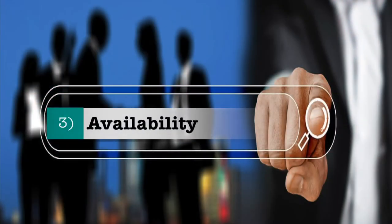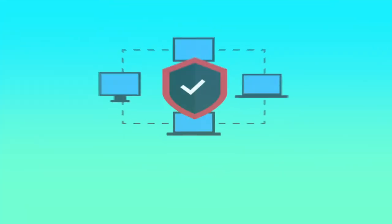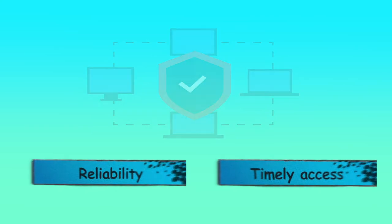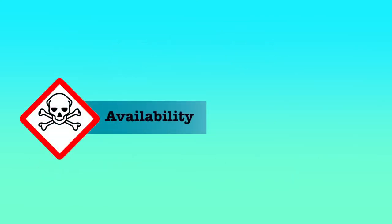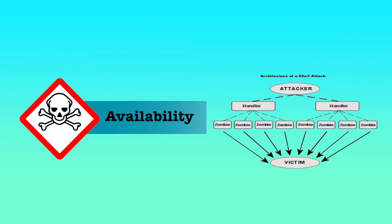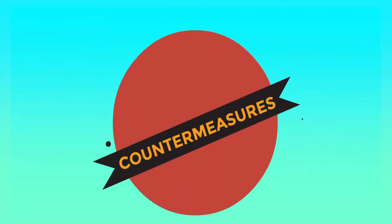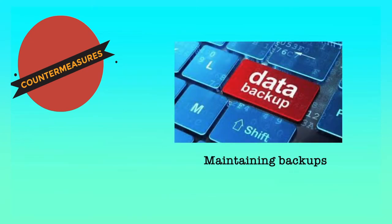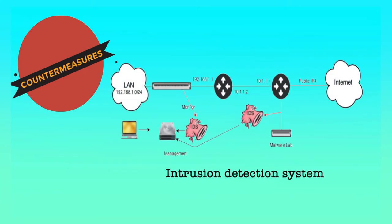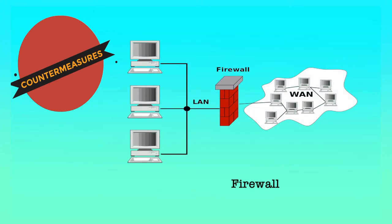The third security principle is availability. Availability ensures reliability and timely access to data and resources for authorized individuals. Threat sources to availability are device or software failure, environmental issues like heat, cold, humidity, static electricity and contamination, which can also affect system availability, and denial of service attacks. Countermeasures include maintaining backups to replace failed systems, using intrusion detection systems to monitor network traffic and host system activities, and using certain firewall and router configurations.